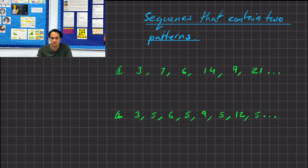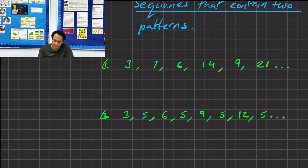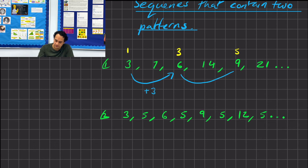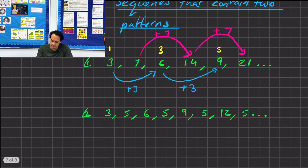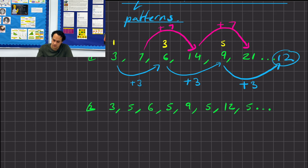Sometimes sequences have two different patterns — one with odd-numbered terms and one with even-numbered terms. For example: 3, 7, 6, 14, 9, 21. The odd-numbered terms (terms 1, 3, 5) go up in 3s: 3, 6, 9. The even-numbered terms go up in 7s: 7, 14, 21. So the next term would be 12, because we add 3 to 9.